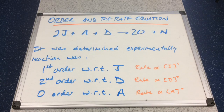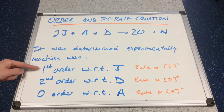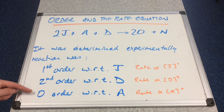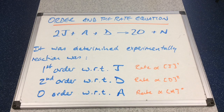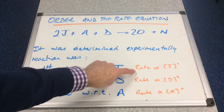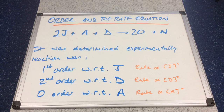Looking at the information about the order with respect to J, D, and A: the rate is proportional to the concentration of J to the power 1, the rate is proportional to the concentration of D to the power 2, and the rate is proportional to the concentration of A to the power 0.